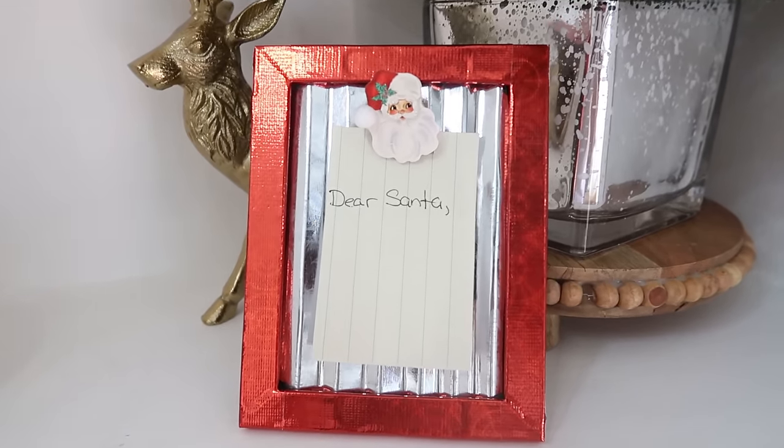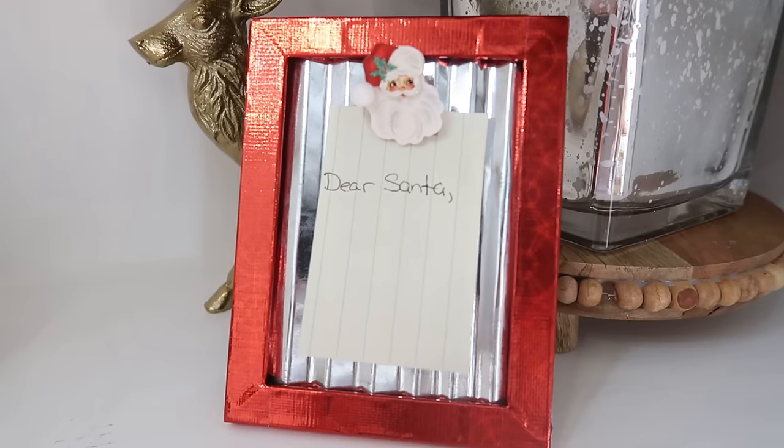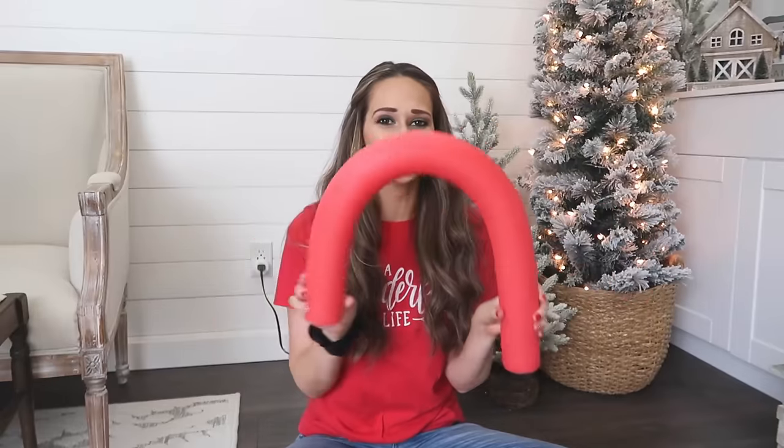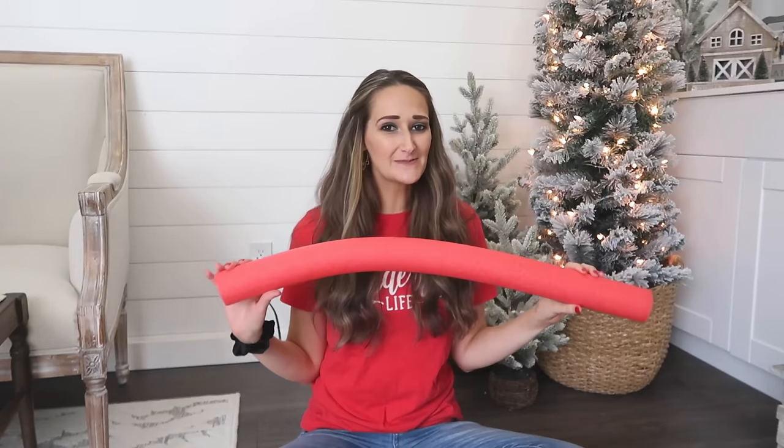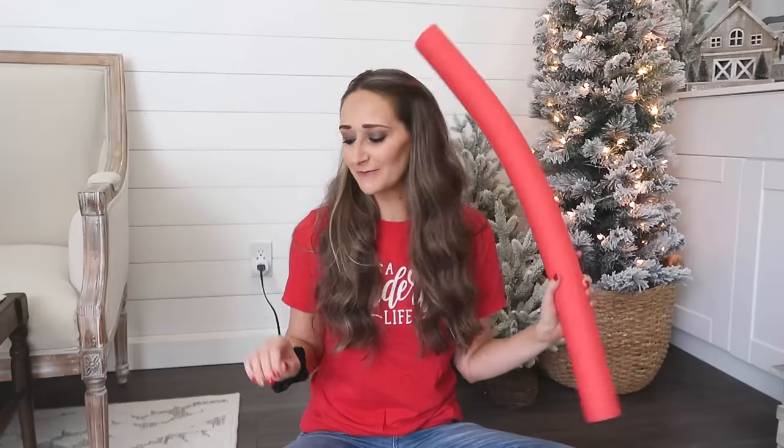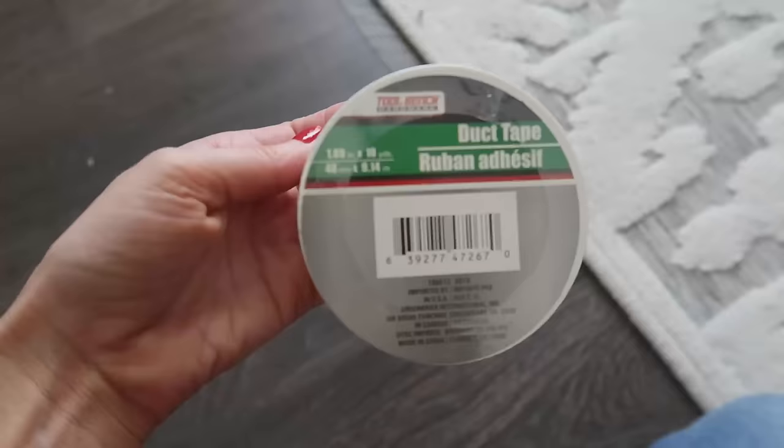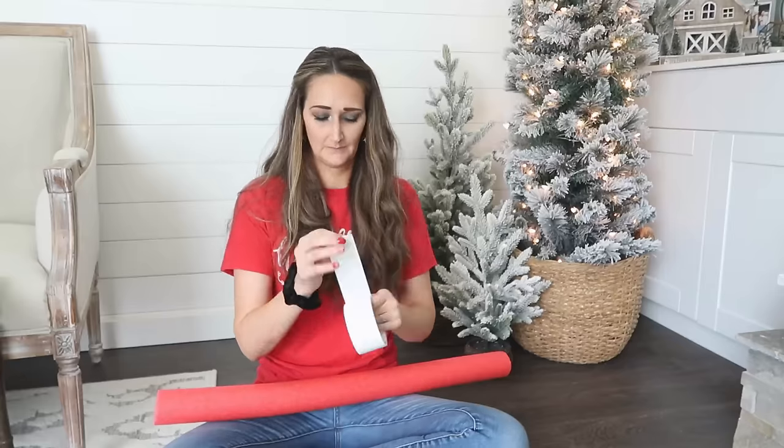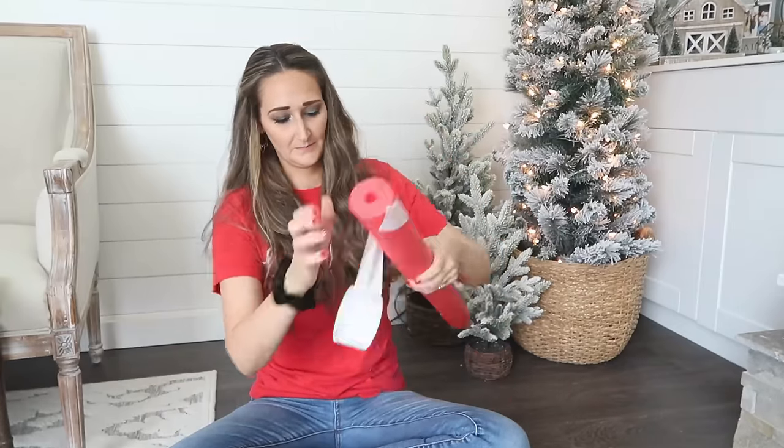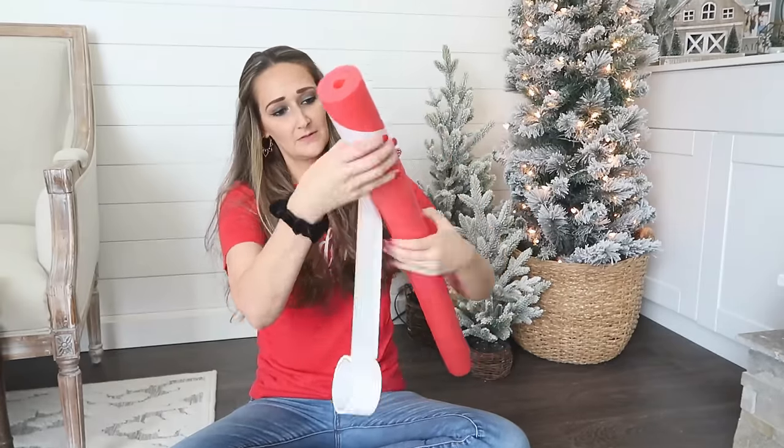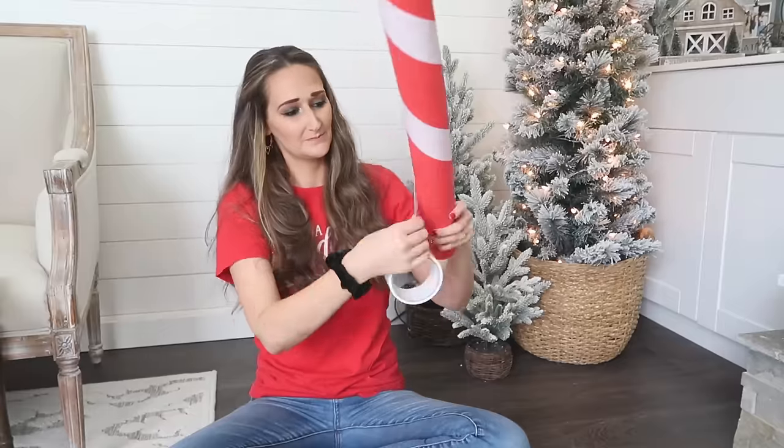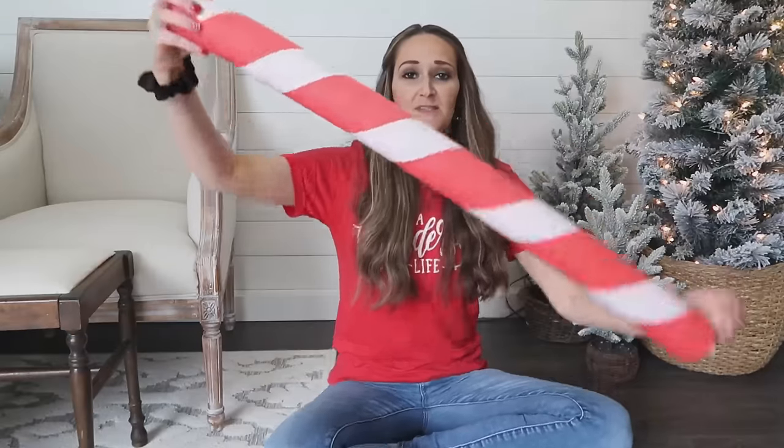These next two ideas are oldies but goodies and I'm throwing them in here because they're great Dollar Tree hacks using duct tape. We're going to make a candy cane out of a pool noodle but we need to do a little bit of Christmas magic to make that happen. Before I show you that, we got to turn this into what looks like a peppermint. So I have some Dollar Tree white duct tape that I'm just going to wrap around the pool noodle first.